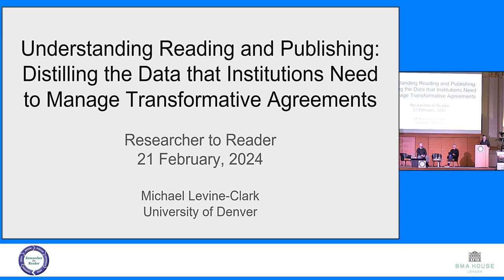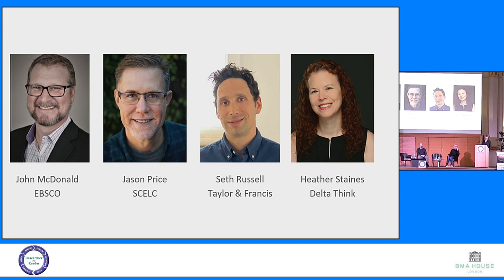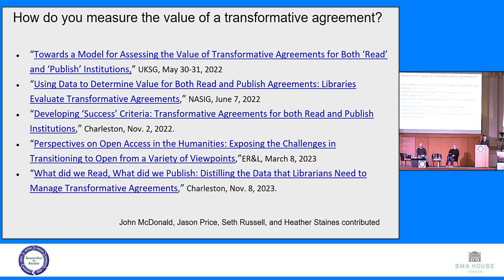I'm going to talk about the data we need to gather in order to do the analysis of transformative agreements. This builds on work I've done with a number of colleagues over the last several years: John McDonald from EBSCO, Jason Price from SCELC, Seth Russell from Taylor and Francis, and Heather Staines from DeltaThink. We've given presentations at UKSG, NASIG, twice at Charleston, and at ERNL, digging into different types of data to help answer the question of how you measure the success of a transformative agreement — both the reading aspect and the publishing aspect.